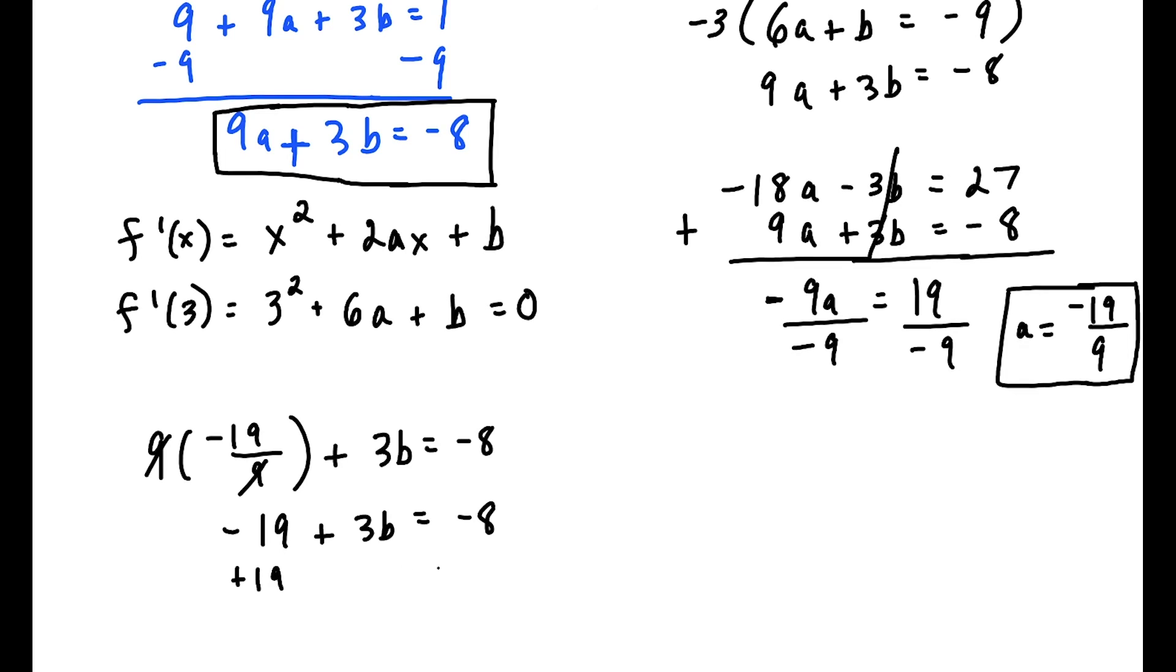So let's move the 19 over, and we have 3b = -8 + 19, which is 11. So divide by 3, and we have our second constant: b = 11/3.